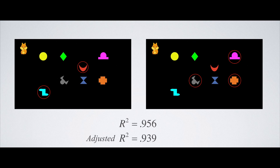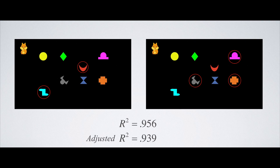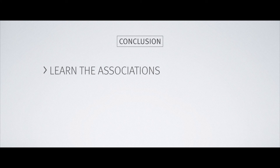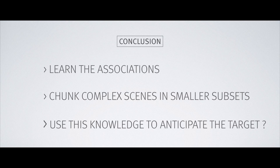As you can see, these two groups of shapes were very strongly correlated with the infants' preference for the familiar scenes during the test phase. In conclusion, we can say that infants were not only able to learn the associations, but also to chunk complex scenes into smaller subsets in order to locate the target. These subsets were strong predictors of their looking times at test. In further studies, we will measure whether they also used this knowledge to anticipate the onset and the location of an interesting target. Thank you for your attention.